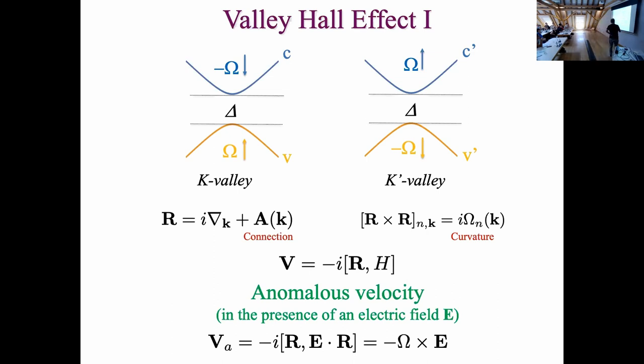So now, once you have the form of the position operator, you can calculate the velocity operator by taking the commutator with the Hamiltonian. If the Hamiltonian had no electric field, then the only thing that you will get is the usual derivative of the energy with respect to k. But if the Hamiltonian includes electric field, which is described by -iE·R in the Hamiltonian, then you see that the non-commutativity of R leads to the appearance of an anomalous velocity. And this anomalous velocity is perpendicular to the electric field, Ω×E, and that's the basic driver of the effects we are going to discuss in this talk.